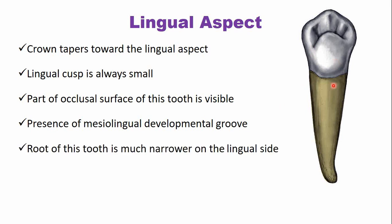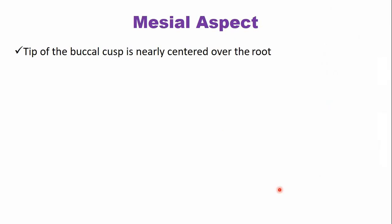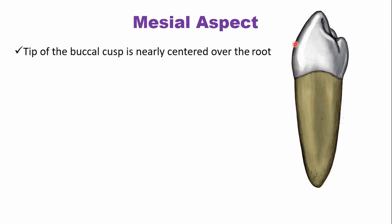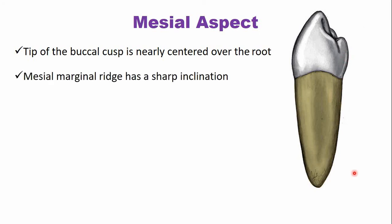The mesiolingual developmental groove is one of the characteristic features of this tooth. Similar to the crown, the root also tapers towards the lingual side, becoming very narrow and forming a sharp ridge. The tip of the buccal cusp is centered over the root due to the more lingual inclination of the crown. The lingual cusp is just in line with the outer border of the root.